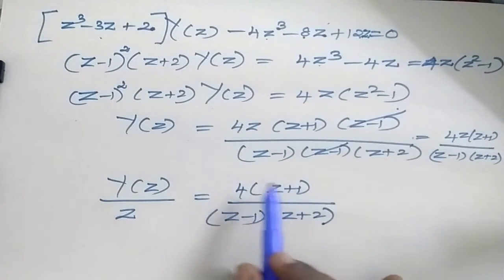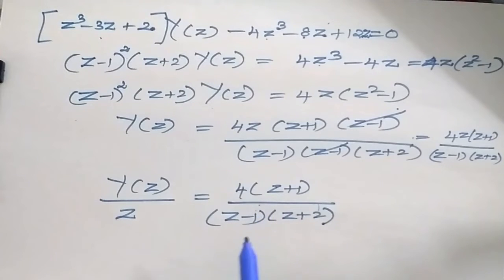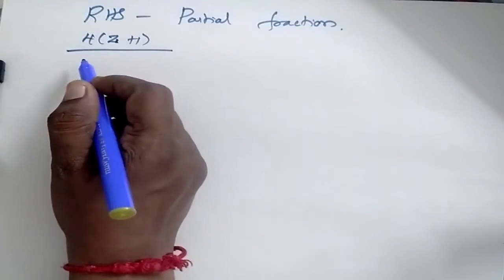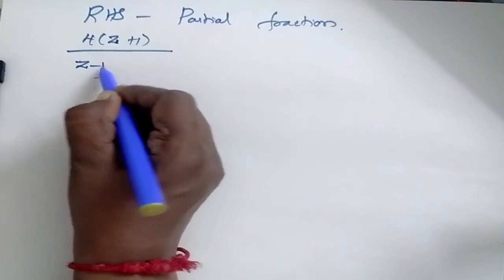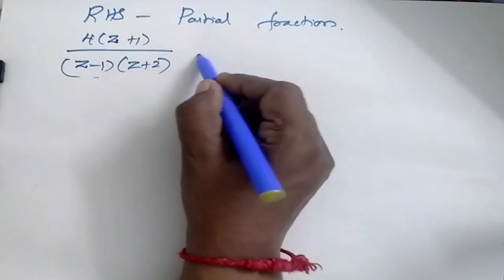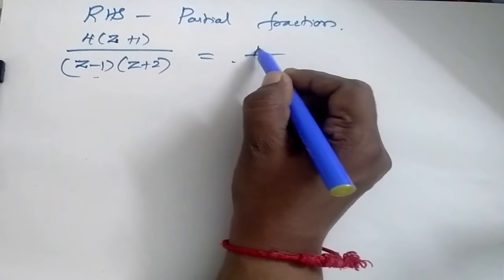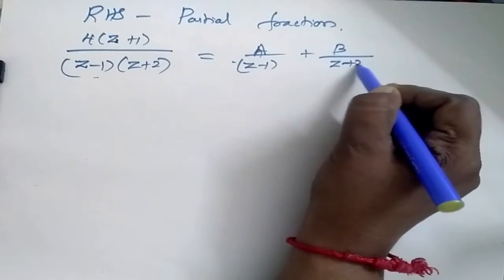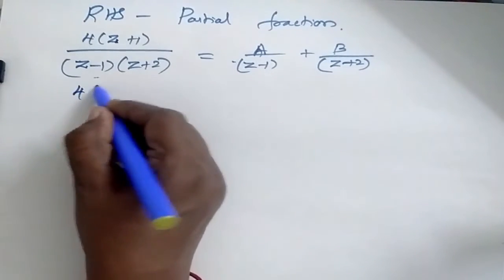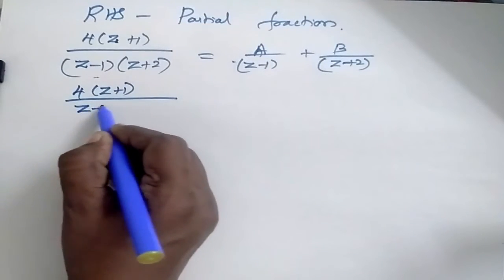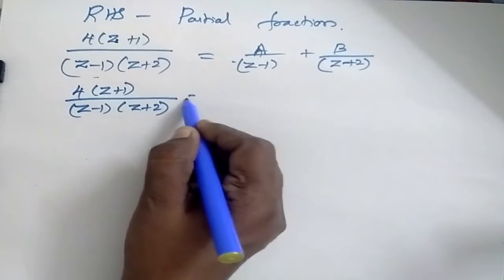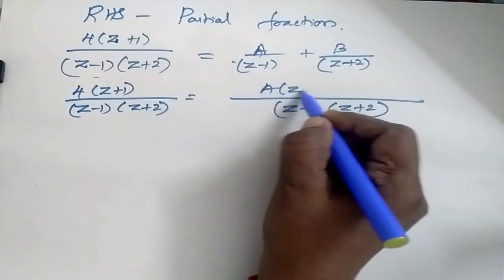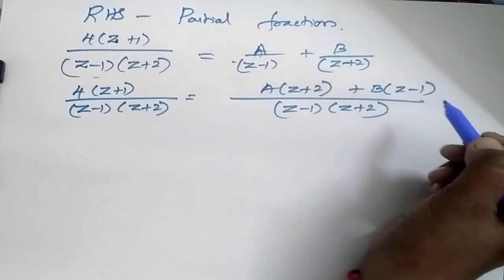Now I am going to simplify this using the partial fraction method. So 4(z+1) divided by (z-1)(z+2) equals A divided by (z-1) plus B divided by (z+2). Multiplying both sides by (z-1)(z+2) gives 4(z+1) equals A(z+2) plus B(z-1).